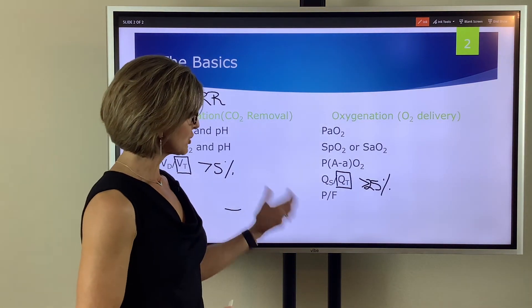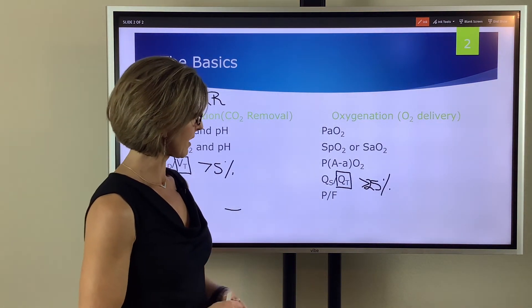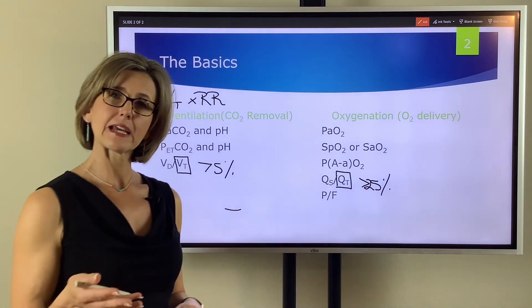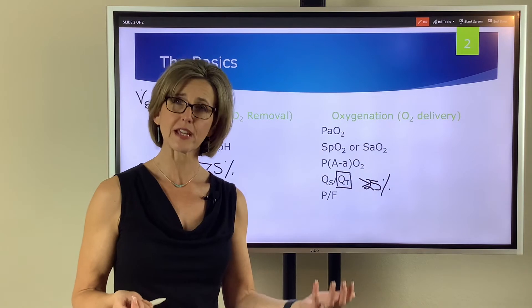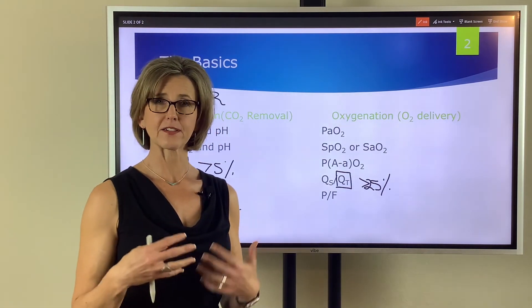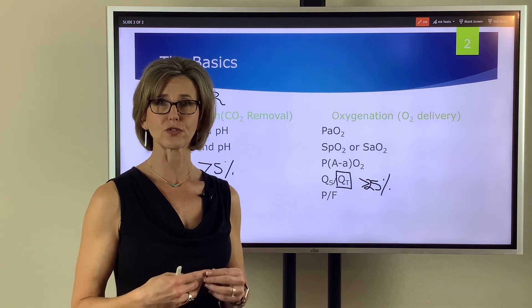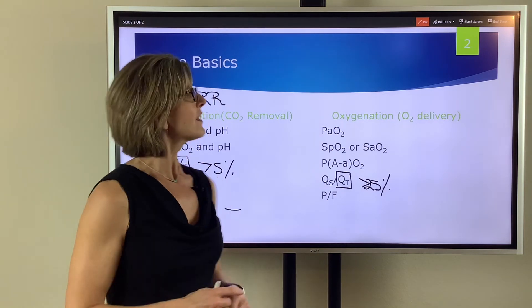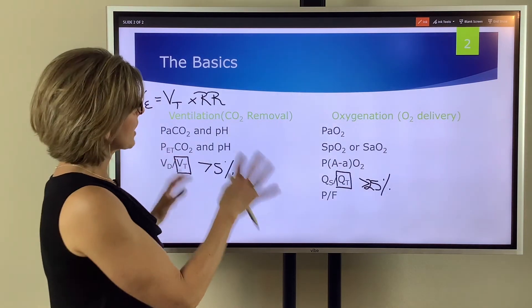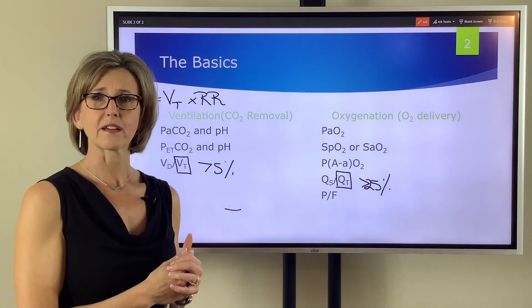So physiologic shunt also tells us about oxygenation as well as the PF ratio. This is the PaO2 compared to the FiO2 and again it gives us an idea of how efficiently oxygen is diffusing across the lung. So there are other things to look at to assess both of these but these are the common ones that the NBRC is going to ask you about.